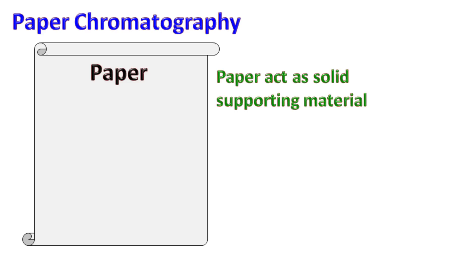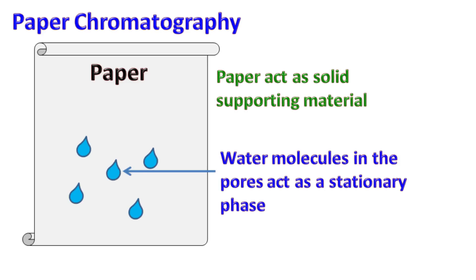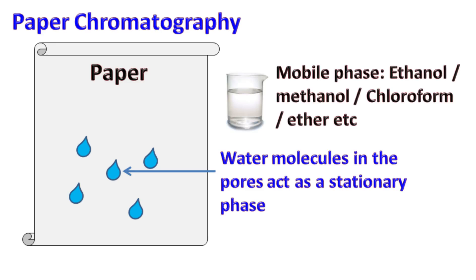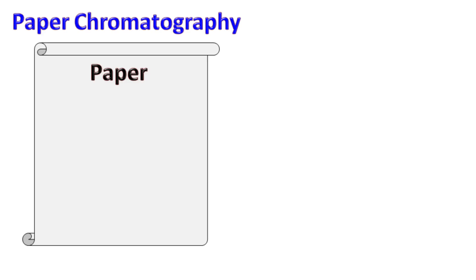In paper chromatography, paper acts as solid supporting material. The water molecules present in the pores of the paper act as a stationary phase, while the mixture of different solvents such as ethanol, ether, etc. can be used as a mobile phase.